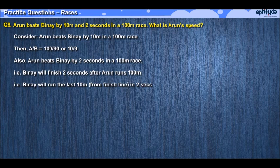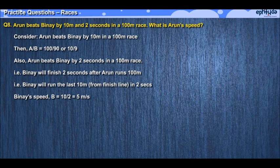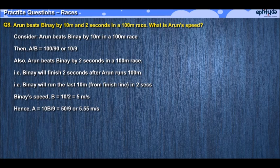At the time when Arun finishes, Pinay was 10 meters behind him and finishes the race 2 seconds after Arun, which means he runs the last 10 meters in 2 seconds. We can immediately calculate Pinay's speed as 10 upon 2, or 5 meters per second, and using this value in the above ratio, you will get Arun's speed.